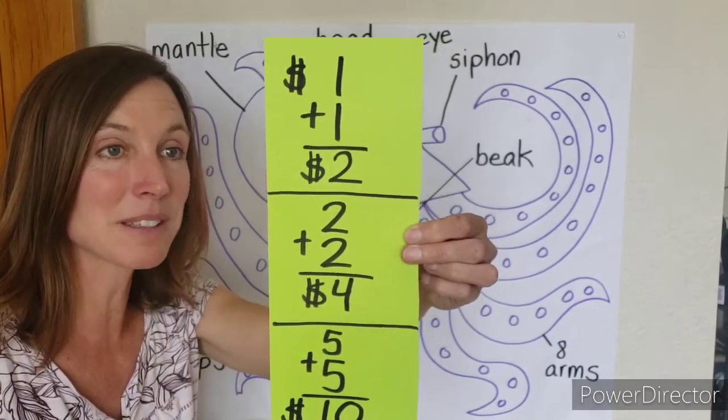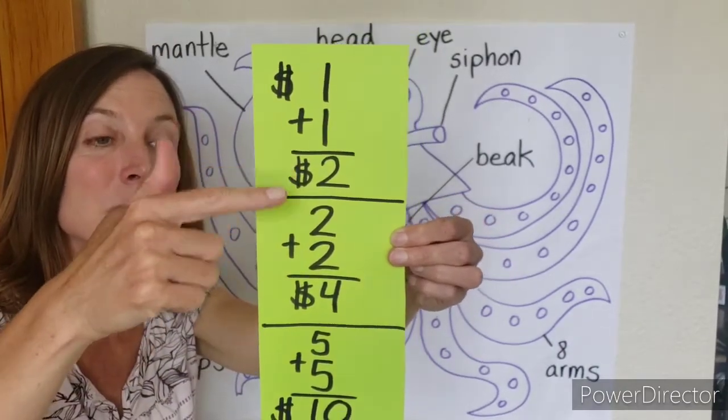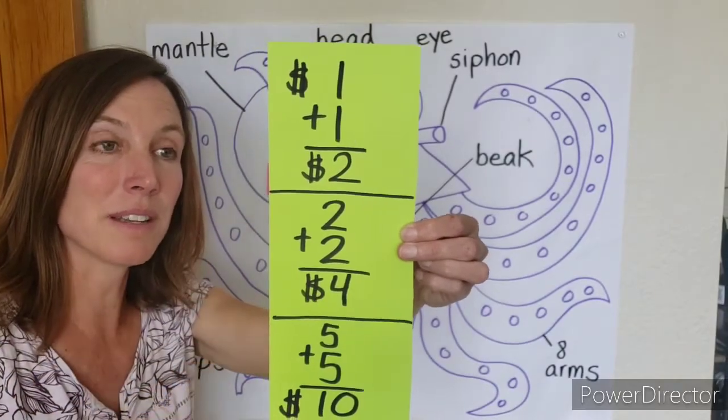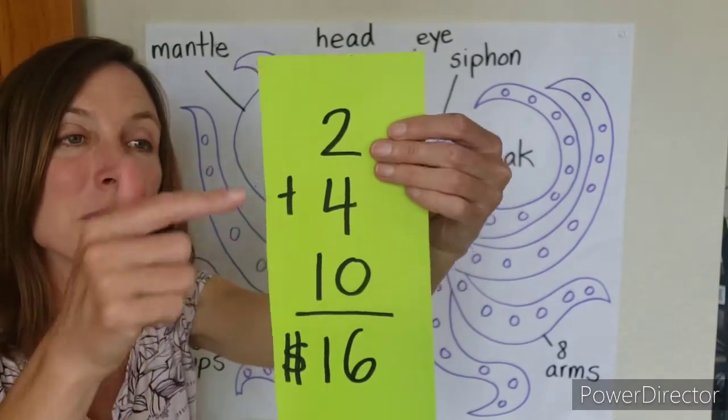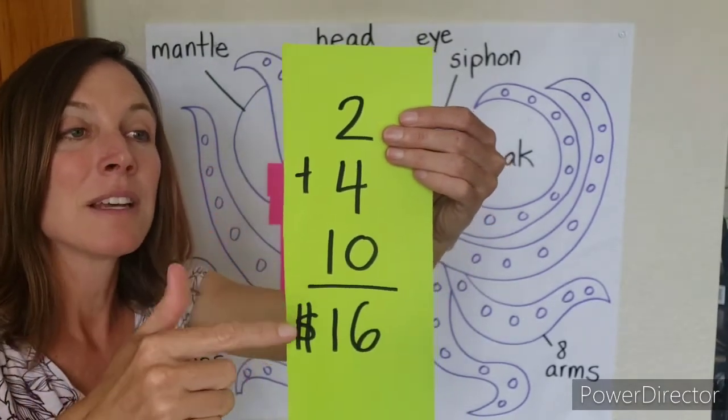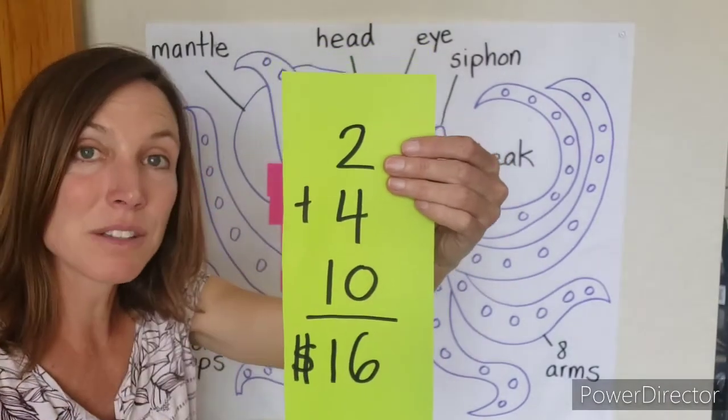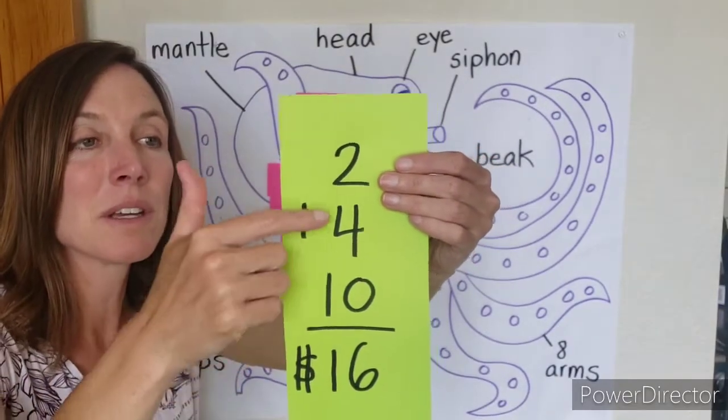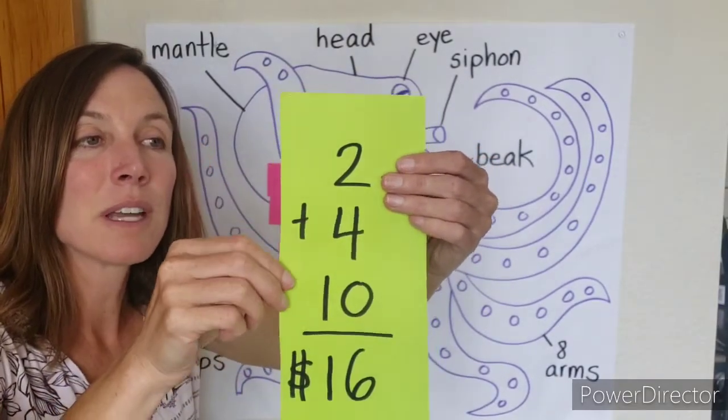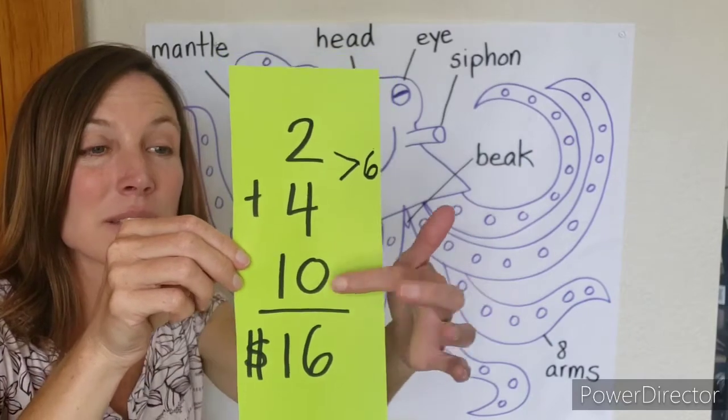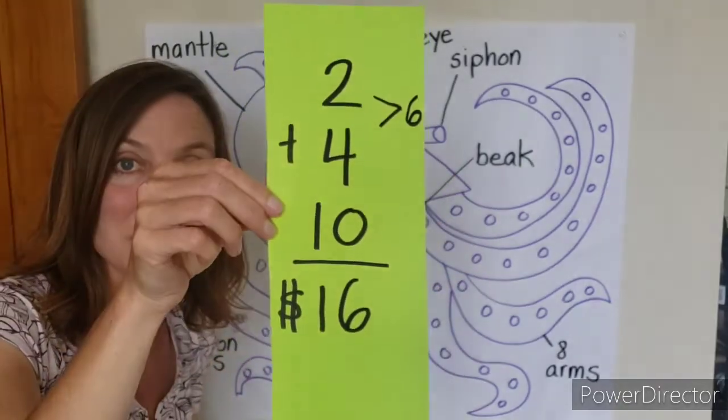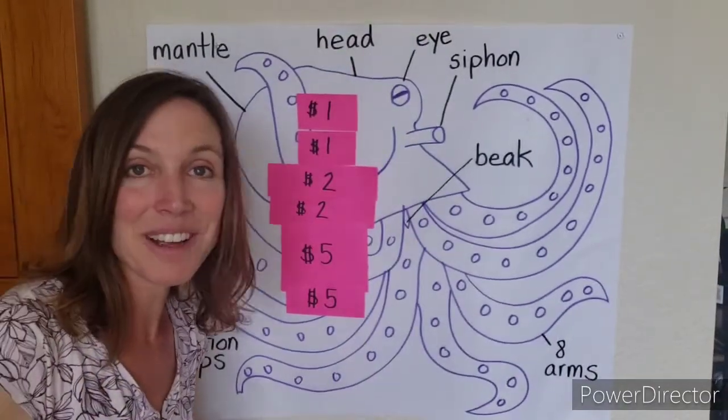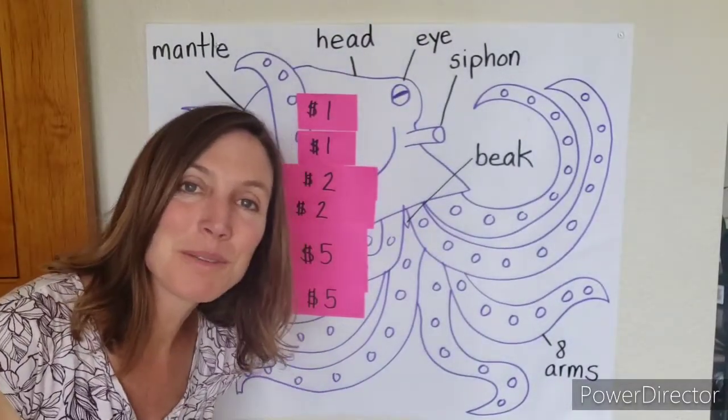Now we have to add two plus four plus ten. I've written them down: two plus four plus ten. Something that we can do is we add two numbers first when we're adding three numbers. We take the two and the four, and that equals six, and then that's really easy to add to ten. So we have six plus ten, which is sixteen dollars. Thanks for doing the octopus quiz with me!